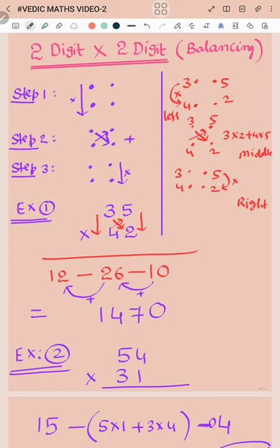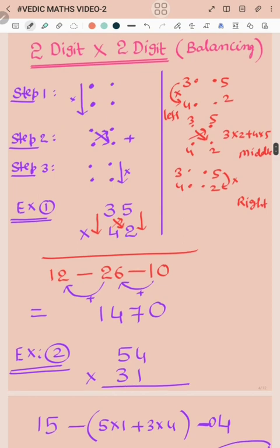First example: 35 into 42. Multiplying 2-digit number with 2-digit number. Step 1, left side numbers 3 into 4, multiply, we get 12. Step 2, corners multiply: 3 into 2 is 6, and 4 into 5 is 20. Add these two: 6 plus 20 equals 26, write in the middle. Step 3, right side numbers: 5 into 2 is 10. Now balancing: first 0, next 1 plus 6 is 7, 2 plus 2 is 4, and 1 automatically. So this way we can do 2-digit into 2-digit number by balancing method.